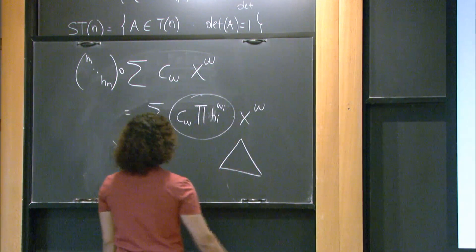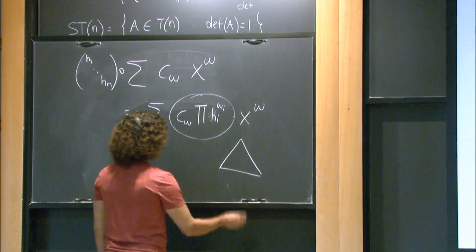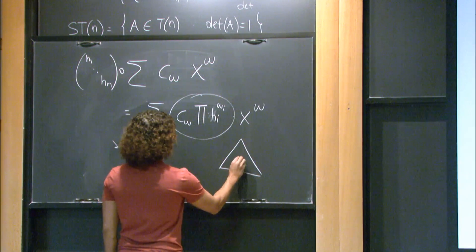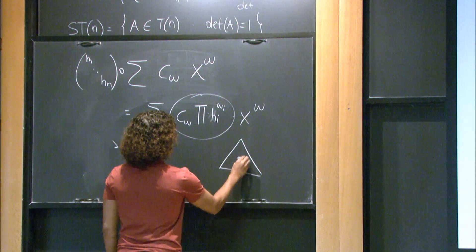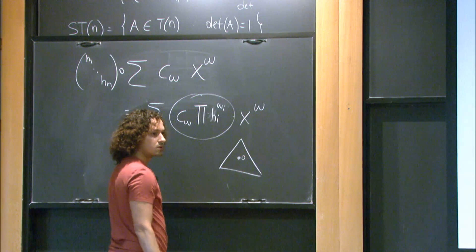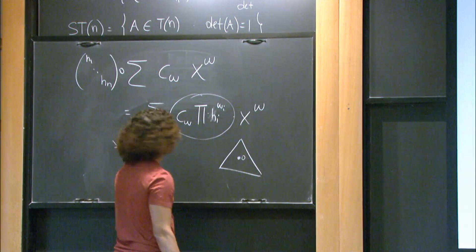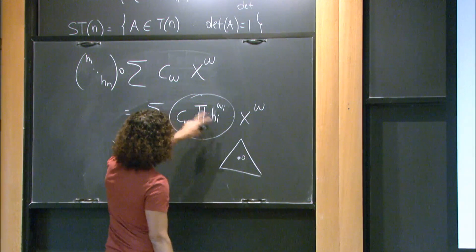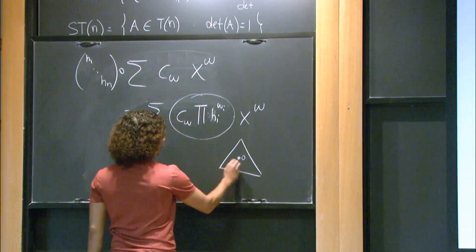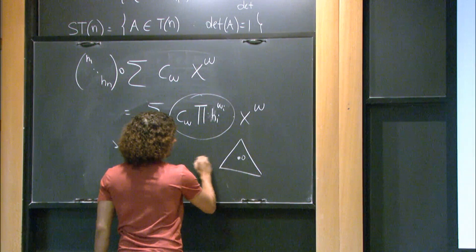Suppose I have a polynomial with three monomials and the zero vector is in this orbit closure. If zero is outside the convex hull, I can find a separating hyperplane.